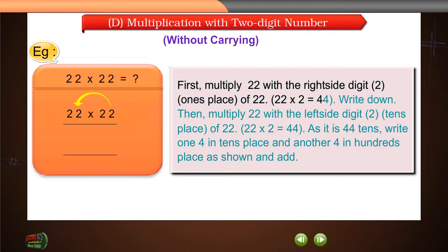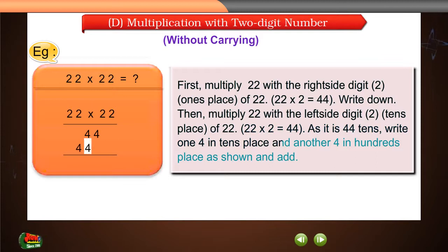Then, multiply 22 with the left side digit to tens place of 22. 22 into 2 is equal to 44. As it is 44 tens, write one 4 in tens place and another 4 in hundreds place as shown and add.